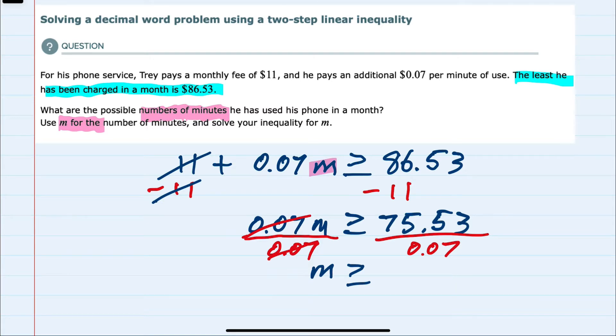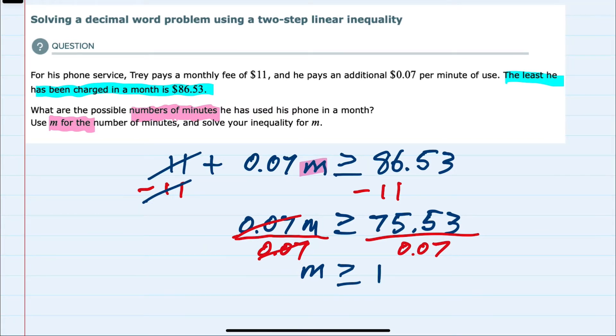Doing the division on the right-hand side, we have 1,079 minutes. So each month, Trey uses at least 1,079 minutes.